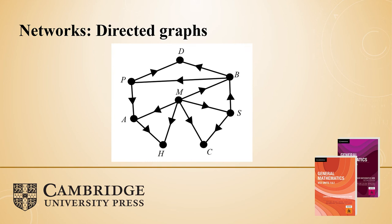Moving ahead, the course then moves into directed graphs. This is where there's some movement — in the previous graphs you could take a flight to and from the capital cities, but in a directed graph there's only one-way traffic. A flight can only go from Melbourne to Brisbane; you can't go back from Brisbane to Melbourne in this scenario.